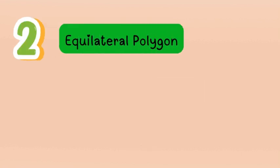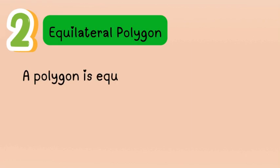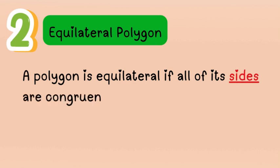In an equilateral polygon, the sides are congruent — as opposed to equiangular, where the angles are congruent. So equilateral has something to do with sides, and equiangular has something to do with angles.